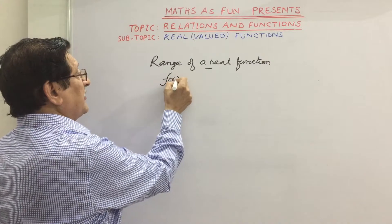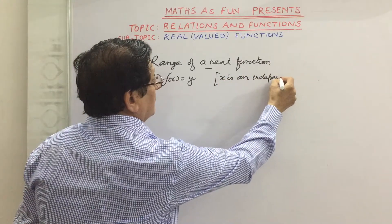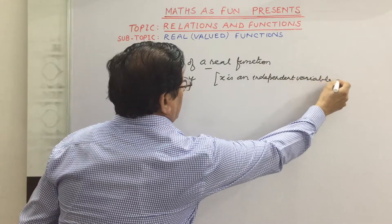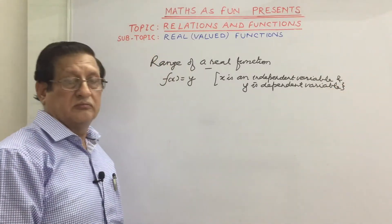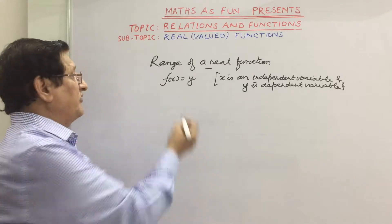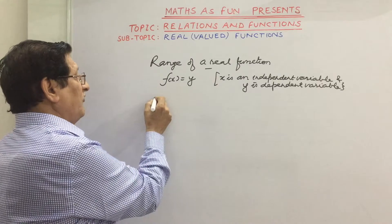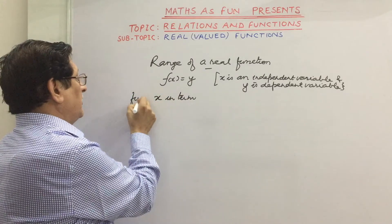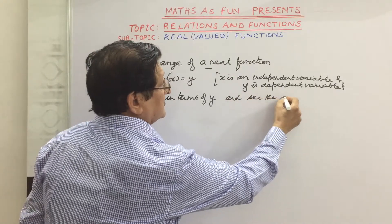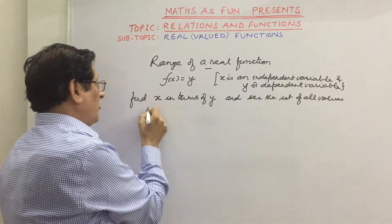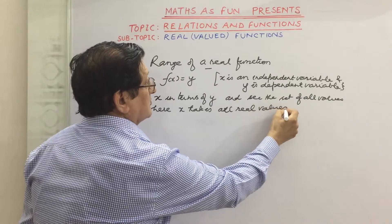To find the range of a real function, we generally let f(x) = y. Here x is the independent variable and y is the dependent variable. Range is the set of images. From f(x) = y, we find the value of x in terms of y, and then find the set of all values y takes as x takes all real values — that is the range.